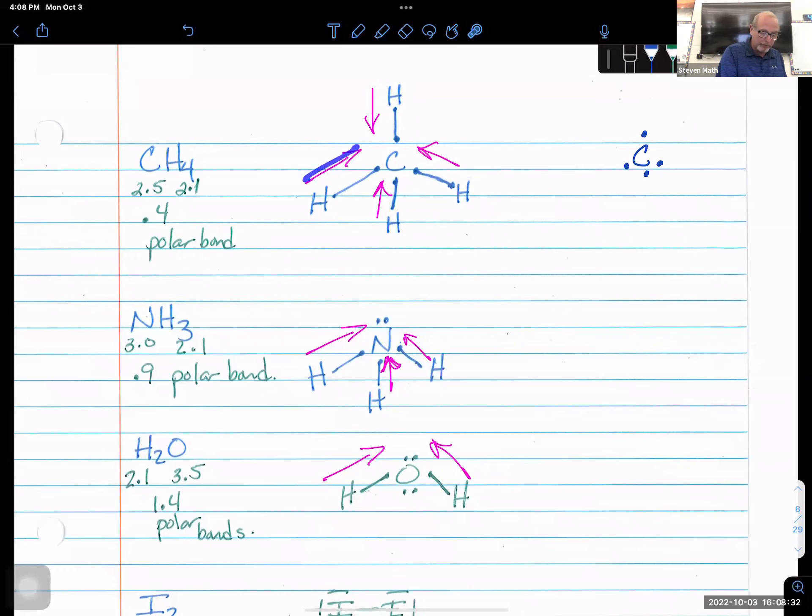So put your carbon in the middle and then put your four hydrogens to pair up with it. Bond, bond, bond, bond. And in this case, the dipoles are pointing in towards the carbon. Now those dipoles are going to become important when we talk about molecule polarity. So carbon makes a nice tetrahedral shape. Four bonds, no loners. Everybody's equivalent, polar bond.